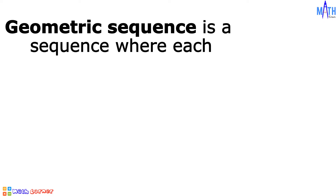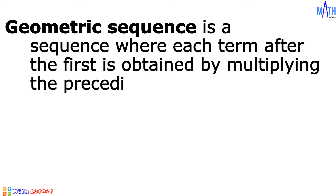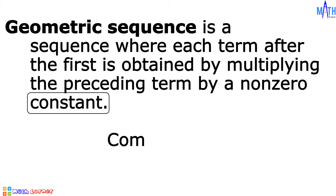Geometric sequence is a sequence where each term after the first is obtained by multiplying the preceding term by a non-zero constant number. That constant number is called common ratio and denoted by a small letter r.